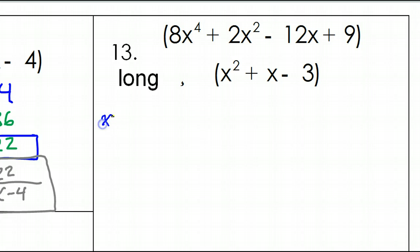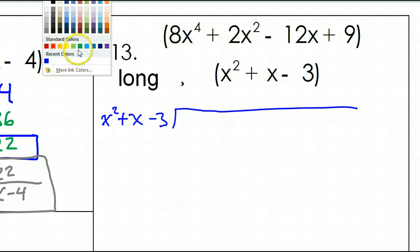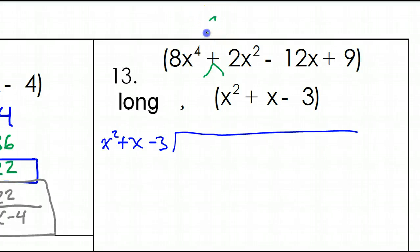We've got x squared plus x minus 3, and we are dividing that into... notice that there's a missing term. Be really careful — it goes from degree 4 to degree 2. What happened to degree 3? So we're going to need a 0 term — 0x to the third power in between these two. Now we have degrees 4, 3, 2, 1, 0. Everything's there, so please don't forget your 0 terms.